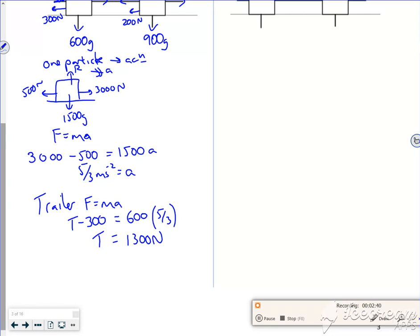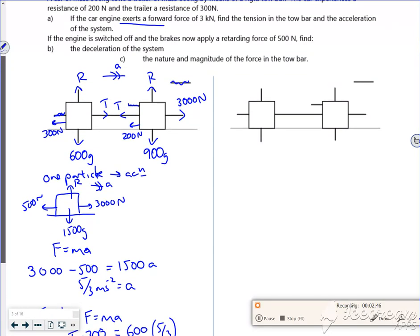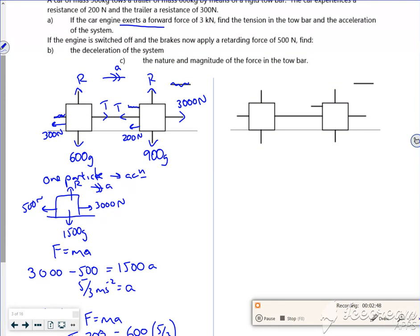So that's part A done there, just looked at the trailer on its own. Right, so part B says the engine is switched off and the brakes are now applied with a retarding force of 500 meters. I hate that word.